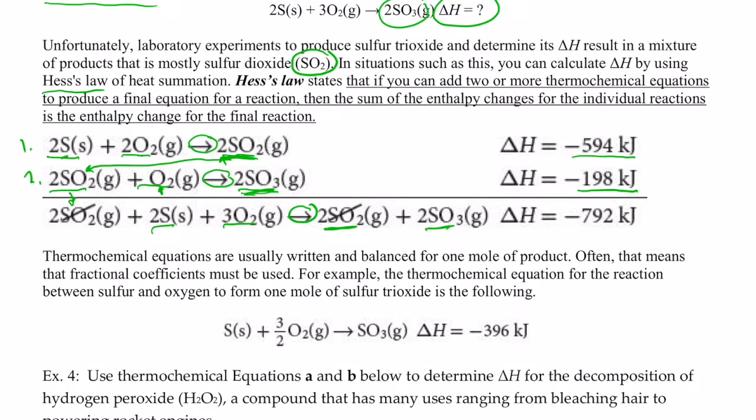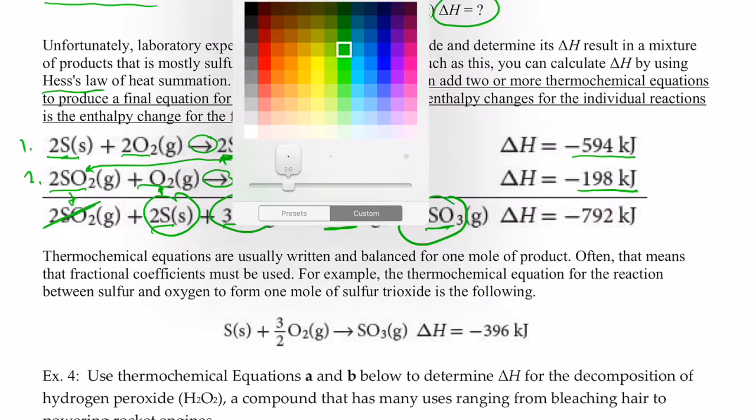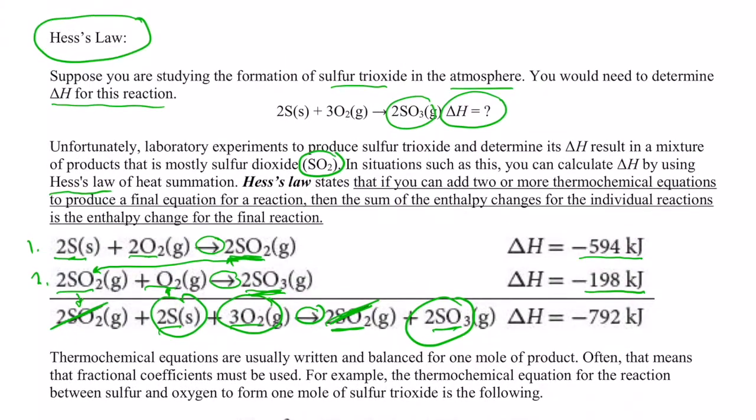Now, let's cancel out the things that are the same on both sides. So we can cancel out these two SO2s with these two SO2s. And look at what we're left with. We're left with two S's plus three O2s make two SO3s. Now, isn't that identical to the equation that we were looking at just a few minutes ago. Two S's plus three O2s make two SO3s. And we didn't know the heat of that reaction.